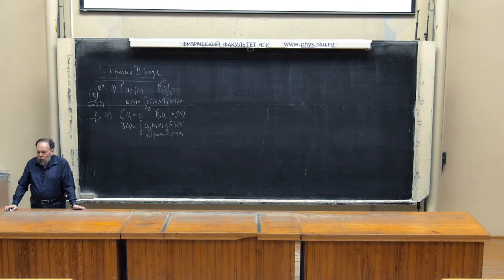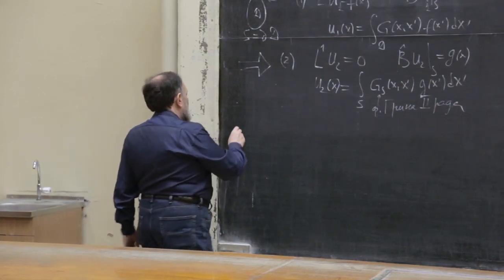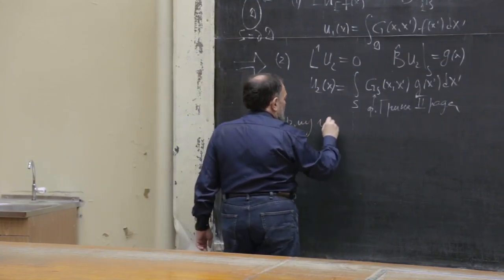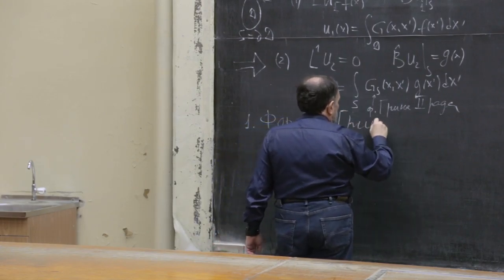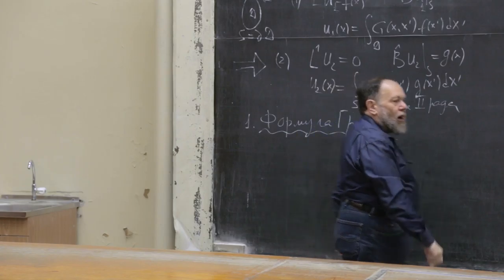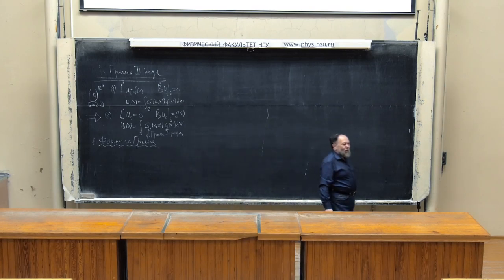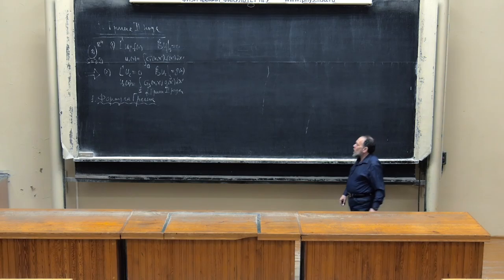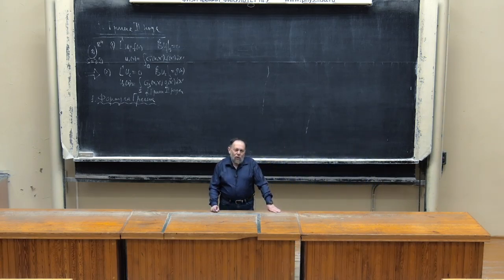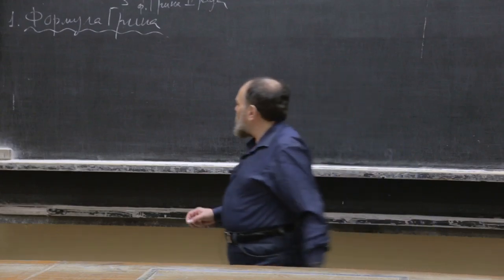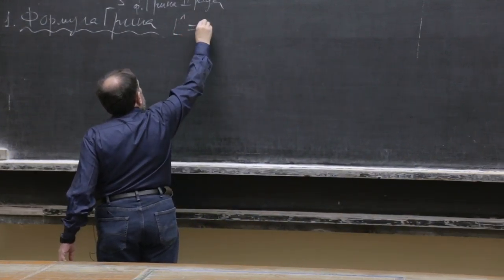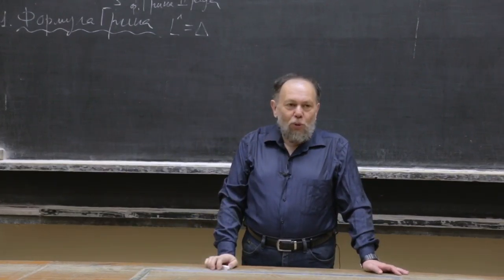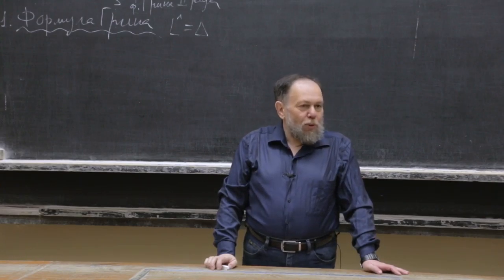Курсор у нас сегодня стоит на задаче 2, которая будет решаться с помощью функции Грина второго рода. Как найти эту функцию Грина второго рода, мы сегодня разберёмся. Первый пункт — формула Грина. Это вспомогательная формула, которая нам поможет найти функцию Грина второго рода. Мы не будем писать в общем виде, а будем конкретно для оператора Лапласа.